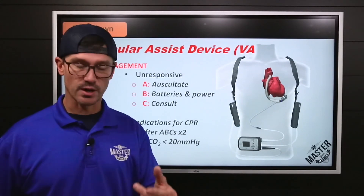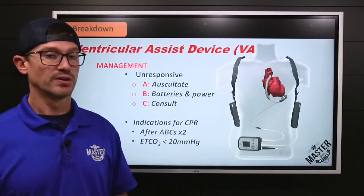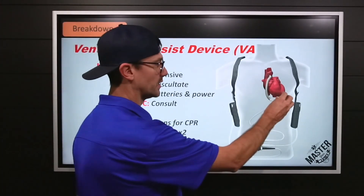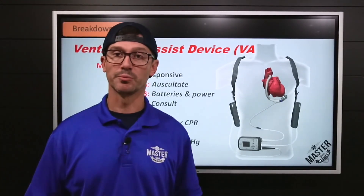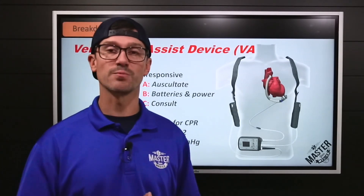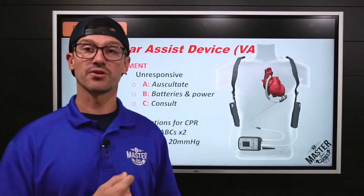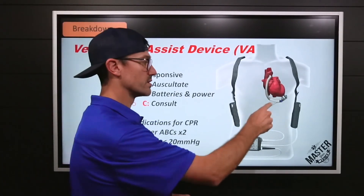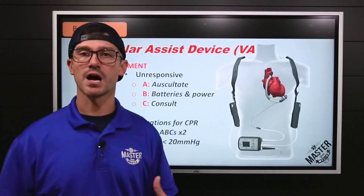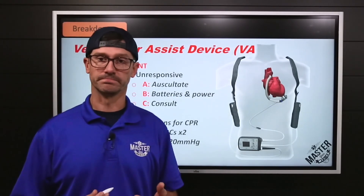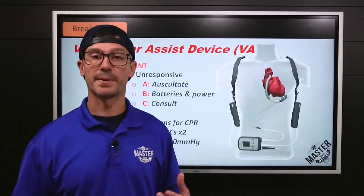Once we've done our airway, breathing, and circulation assessment, with VAD patients we do ABCs one more time. We are going to oscillate — take our stethoscope and listen over that point of maximum impulse. Right where we would place V4 on a 12-lead is where we oscillate, the point where you can most clearly hear the heart the loudest, and that is right where the pump will be. When you listen, you're listening for a humming effect — that electronic sound produced by the pump.